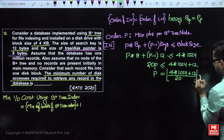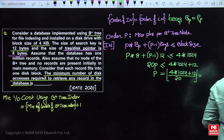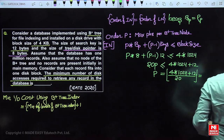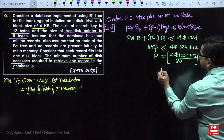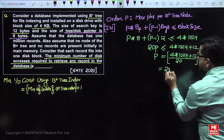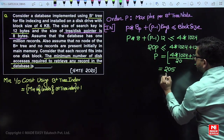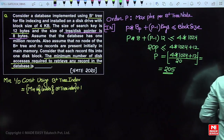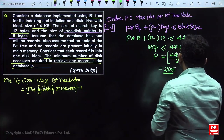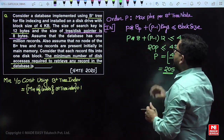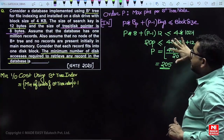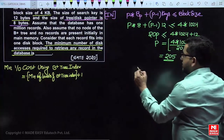Calculating the order P value: floor((4 × 1024 + 12) / 20) = floor(4108 / 20) = 205. So the order P is 205.